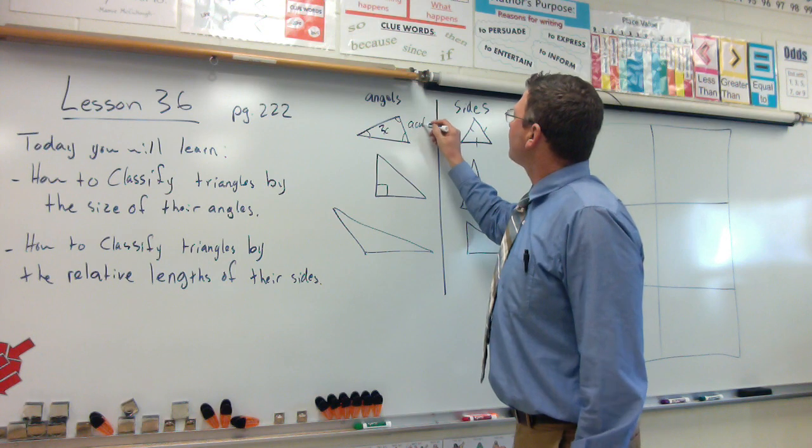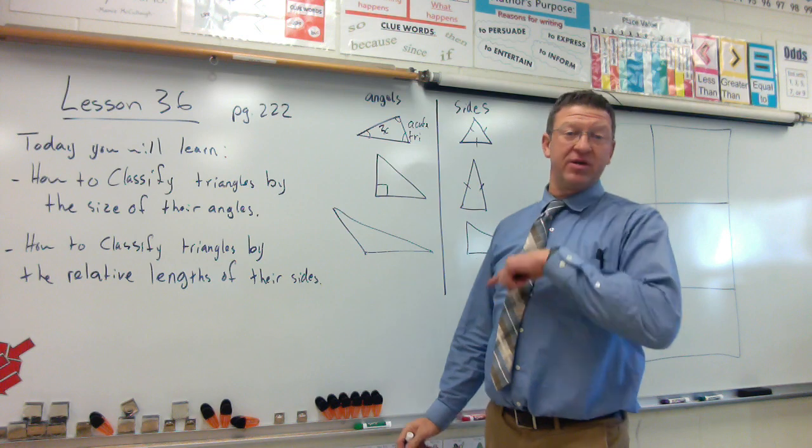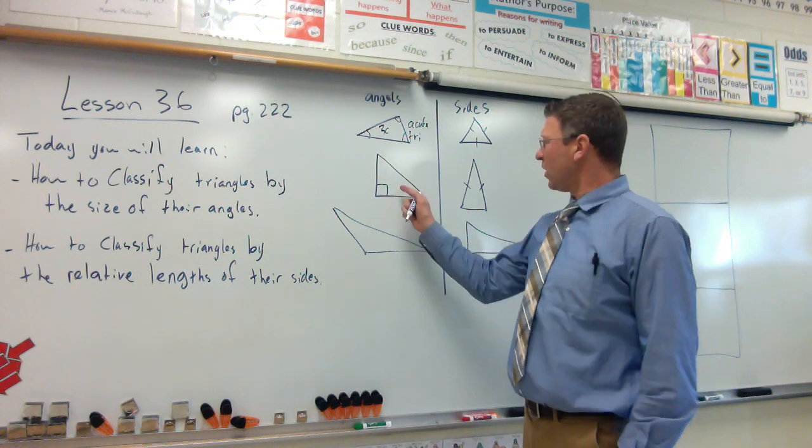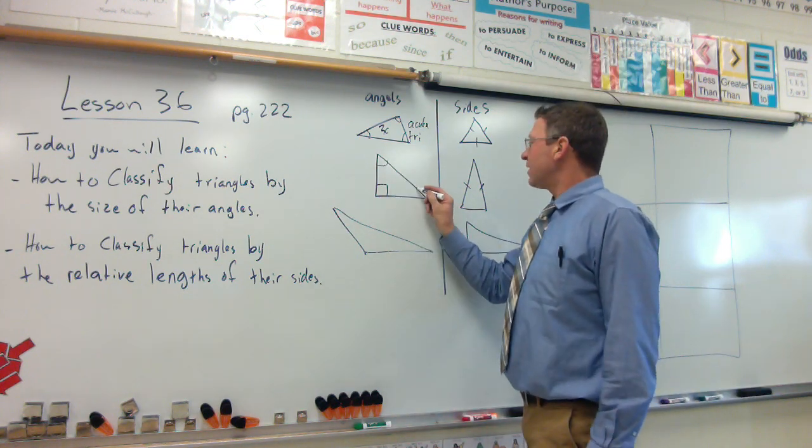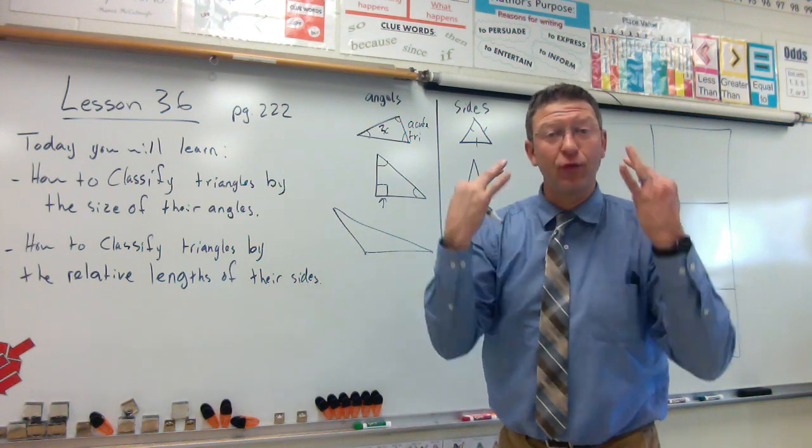Well, that's pretty obvious, okay? An acute triangle, and I'm not going to write triangle 8,000 times today. I'm just going to put tri triangle. Now, this one has an acute angle, an acute angle, and one right angle. So to be an acute triangle, you have to have three.